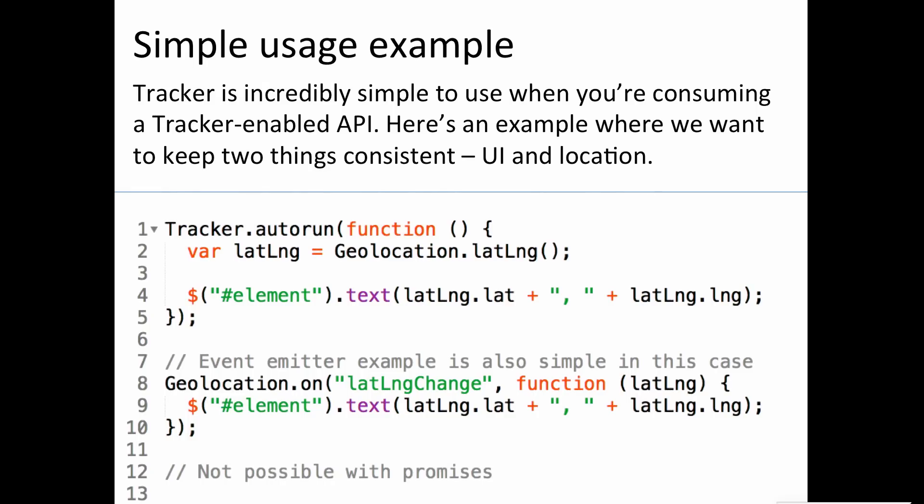Here's an example of a really simple way you might want to use Tracker — let's say you don't even have Blaze, you're not even inside Meteor. One of the things I think would be really cool is people using Tracker outside of Meteor. Let's say you just have a package that tells you the current location using the browser's geolocation API, and you just want to put that inside a DOM node using jQuery. Lines one through five here are how you would do that with Tracker. Lines seven through eight is how you would do that with a more standard API that JavaScript people are used to, which is like an event emitter — you basically just listen to certain events on an object and then do something when that event happens.